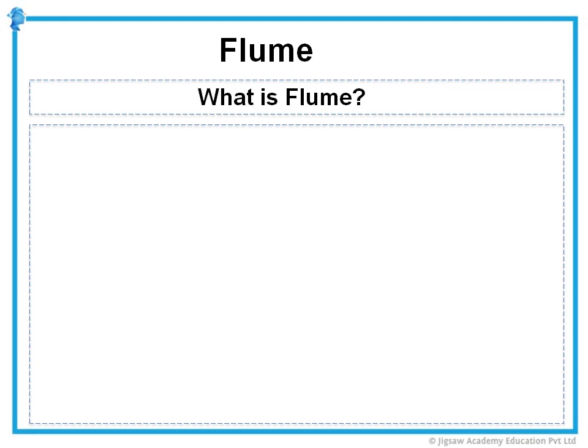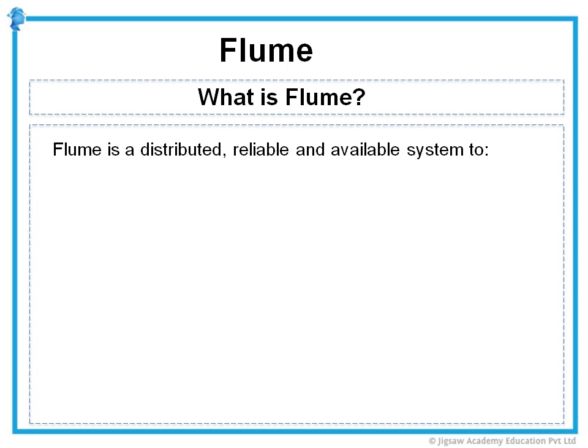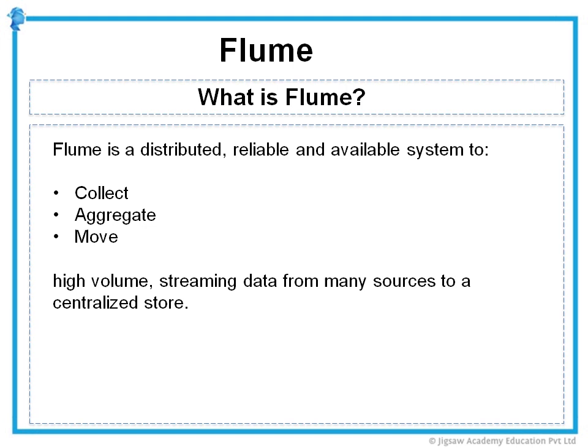But what exactly is Flume? Flume is a distributed, reliable and available system for efficiently collecting, aggregating and moving high-volume streaming data flows from many different sources to a centralized store. Apache Flume uses an elegant design to make data loading easy and efficient. In this video, we will describe the basics of Apache Flume and illustrate how to quickly set up Flume agents for collecting fast-moving data streams and pushing the data into Hadoop's file system.